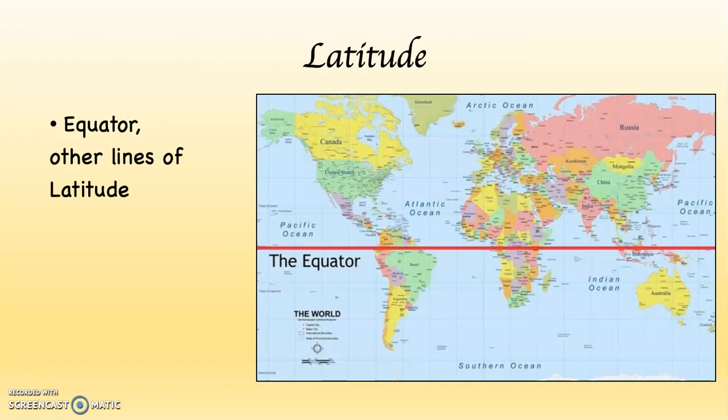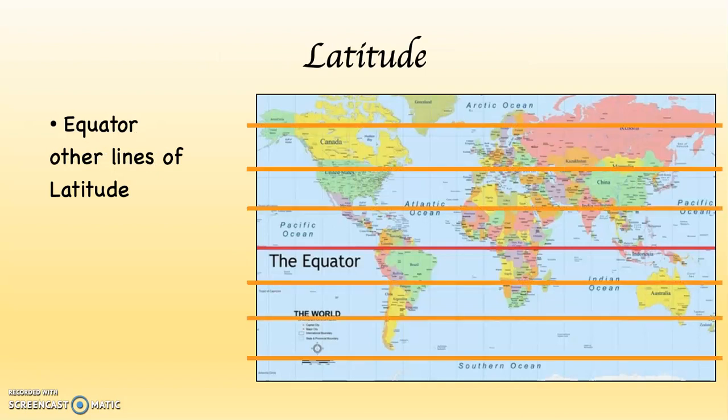There are other lines of latitude besides simply the equator. Those lines are called parallels — the technical scientific name for lines of latitude. Parallels are exactly what they sound like: they are parallel to each other, meaning they never touch and always remain the same distance apart. Lines of latitude are always 69 miles apart. So if you travel from 5°N to 6°N, you went 69 miles. If you travel from 10°S to 20°S, you traveled 10 degrees of latitude — 10 times 69 equals 690 miles.